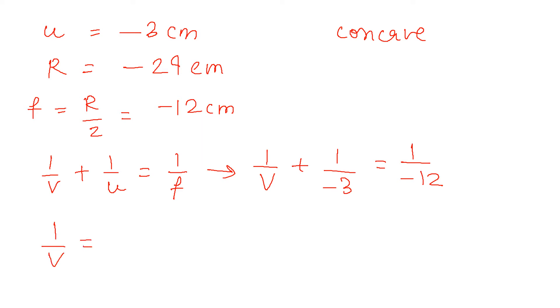Solving it: 1/V = 1/(−12) − 1/(−3) = −1/12 + 1/3. That equals −1/12 + 4/12, which is 3/12.